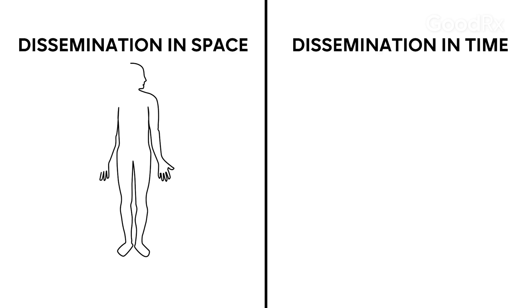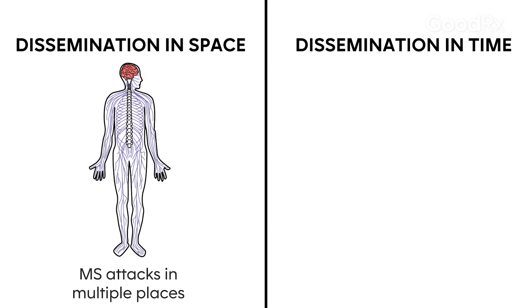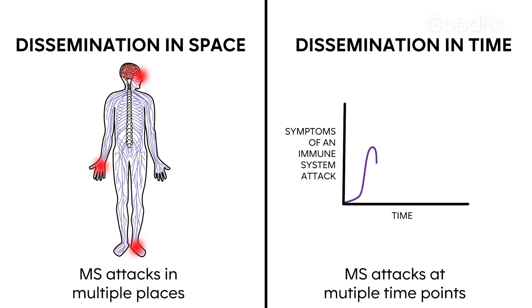When we diagnose a patient with MS, we use something called dissemination in time and space. What we want to prove is that a patient has had evidence of an immune attack in multiple places in the central nervous system — that's dissemination in space — and at multiple time points — that's dissemination in time. We use those criteria because MS is really one of the only conditions where we see both: multiple points in the nervous system and multiple points in time.